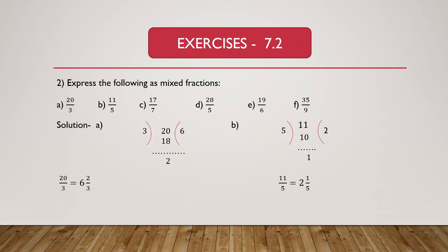Now we will solve question number 2. Question number 2 says: express the following as mixed fraction. Part A is given as 20 divided by 3. Here 20 is the dividend and 3 is the divisor. We know 3 multiplied by 6 is 18, then 20 minus 18 is 2. So 6 is the quotient and 2 is the remainder. Mixed fraction equals quotient remainder divided by divisor, so 20 divided by 3 equals 6 and 2/3.